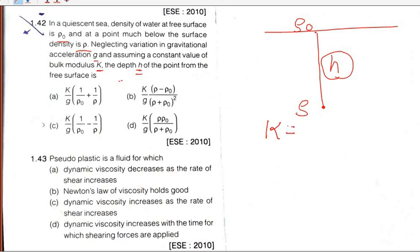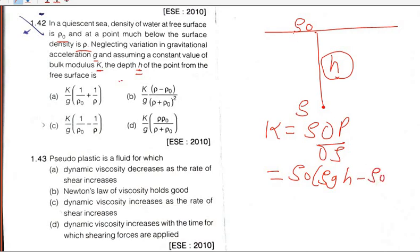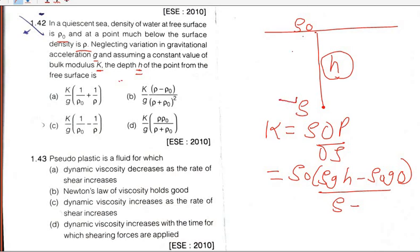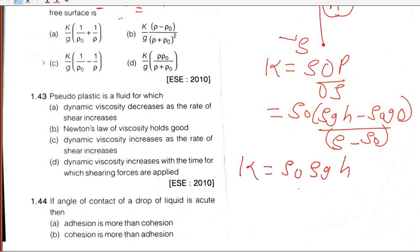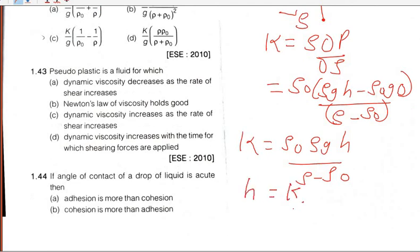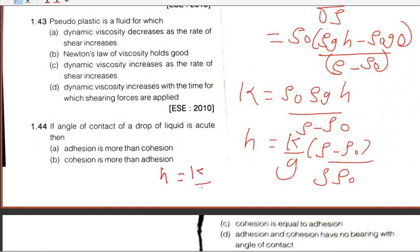We know that the formula of bulk modulus is K = rho × (dP / drho). The change in pressure is rho × g × h minus rho0 × g × h, and the change in density is rho minus rho0. So h equals K divided by g, multiplied by (rho minus rho0) upon (rho0 × rho).